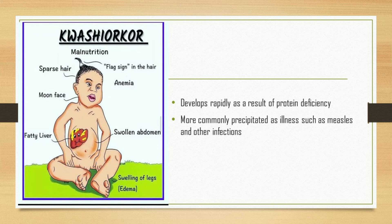The distinguishing feature of kwashiorkor is edema—swelling with fluid, especially in the ankles and feet. Other signs and symptoms include bloated stomach and ascites, dry brittle hair, hair loss, and loss of pigment in the hair, dermatitis with dry peeling skin, scaly or red patches, symptoms of fatty liver disease, depleted muscle mass but retained subcutaneous fat, dehydration, loss of appetite, irritability and fatigue, and stunted growth in children.